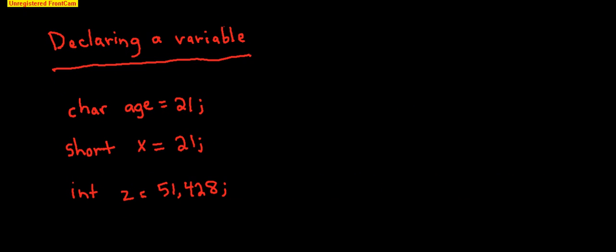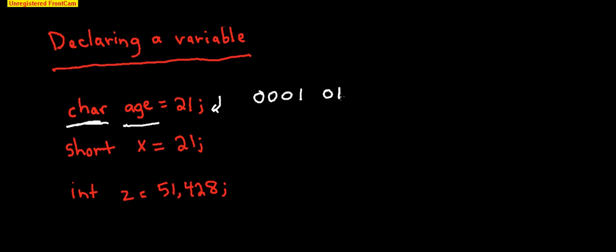Let's take a look at declaring a variable. When you want to create a new variable, you first start with the data type. In our case, we're creating a variable with the type of char, and then you follow with the name of the variable and what it's equal to. Don't forget the semicolon. Because we're calling this a data type of char, this is only going to be 1 byte, so the number saved in the computer will be 0,0,0,1,0,1. This is 1 byte.